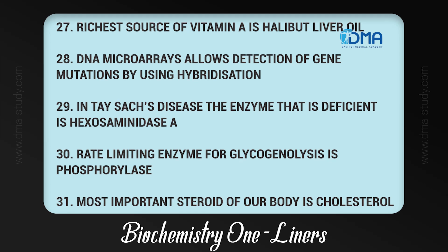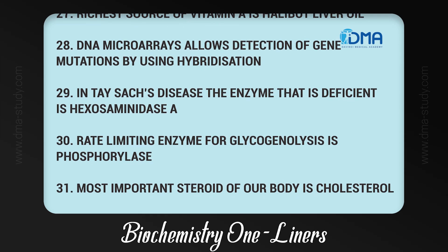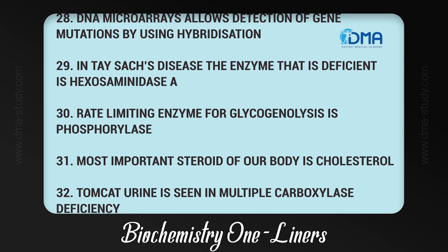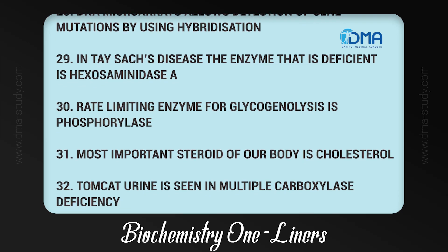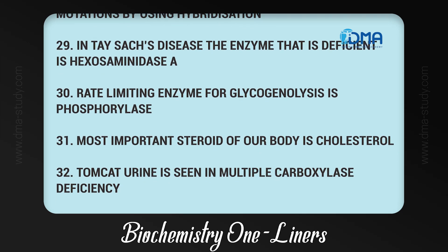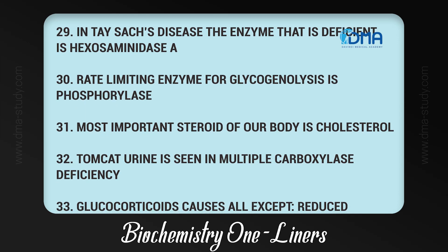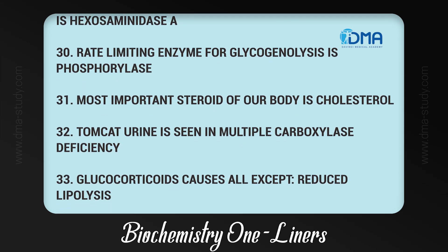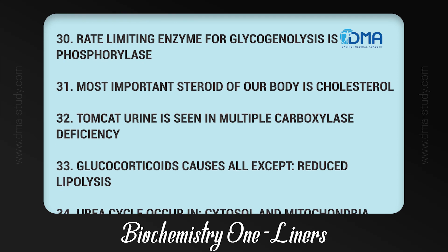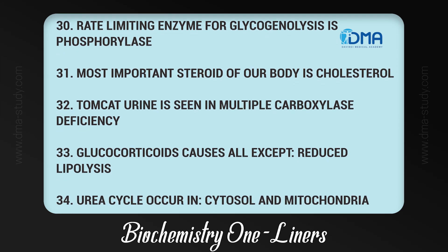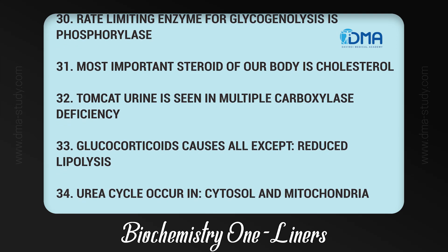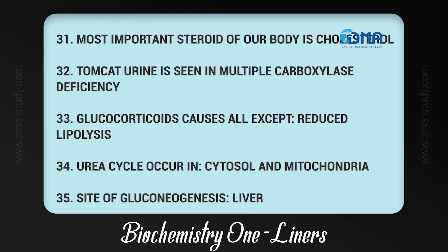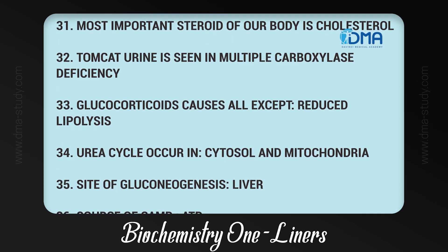30. In Tay-Sachs disease, the enzyme that is deficient is hexosaminidase A. 31. Rate-limiting enzyme for glycogenolysis is phosphorylase. 32. Most important steroid of our body is cholesterol. 33. Tomcat urine odor is seen in multiple carboxylase deficiency. 34. Glucocorticoids cause all effects except reduced lipolysis.